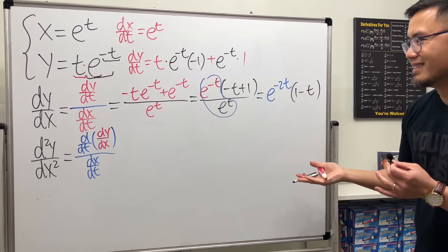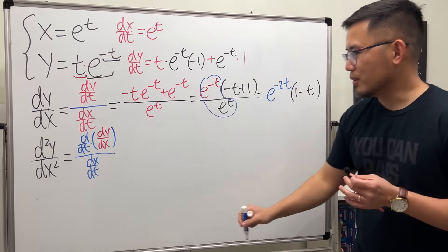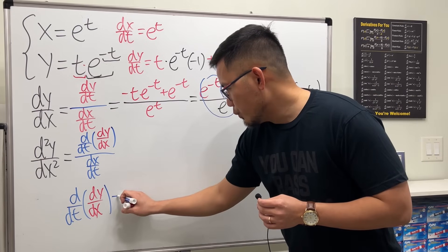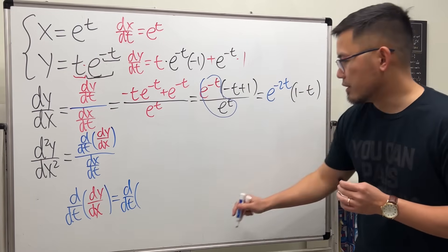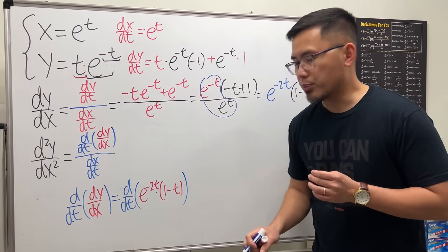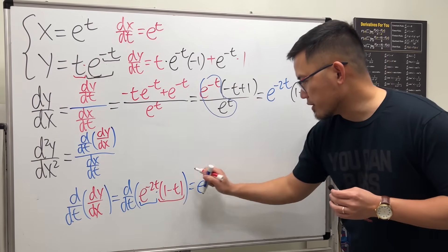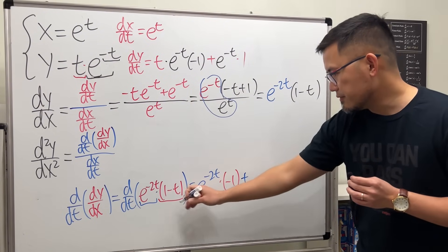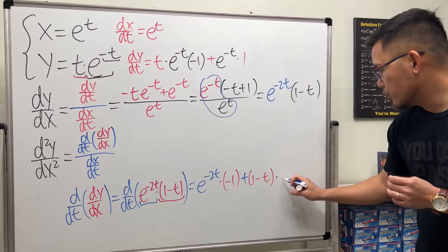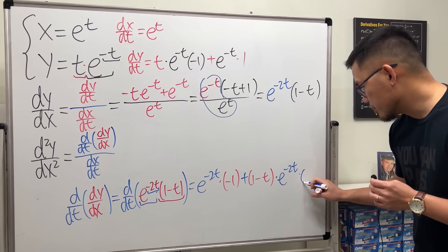For d²y/dx², we take the derivative with respect to t of that result. So we need d/dt of e to the negative 2t times (1 minus t). To take this derivative, we use the product rule: keep the first function e to the negative 2t and multiply by the derivative of the second, which is negative 1. Then add the second function (1 minus t) times the derivative of the first. The derivative of e to the negative 2t, by the chain rule, is e to the negative 2t times negative 2.